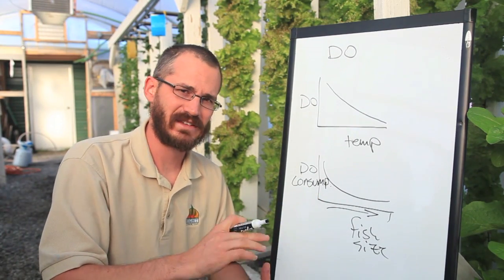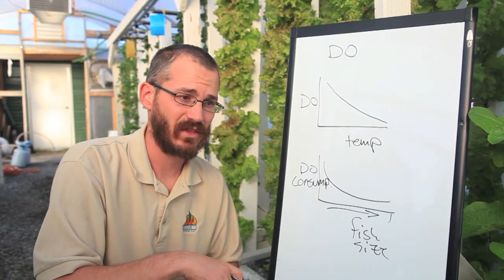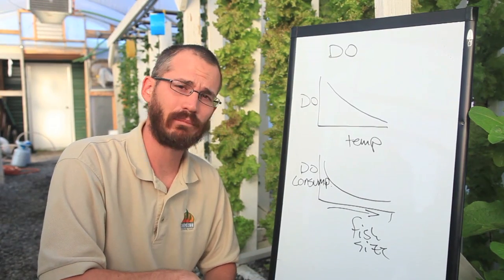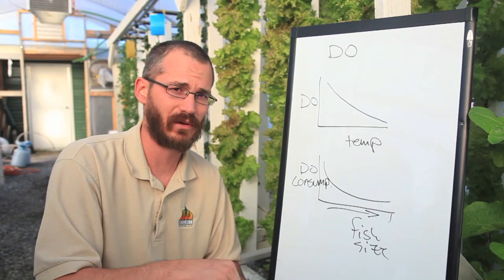If you have, say, 10 pounds of fingerlings in a tank compared to 10 pounds of mature fish, the oxygen consumption is going to be much, much higher. So that's really important to remember when you're setting up your systems, especially at the beginning when everyone's starting off with fingerlings.